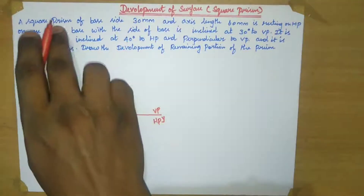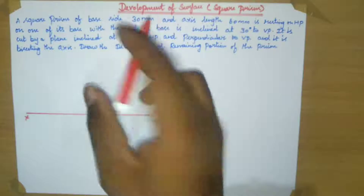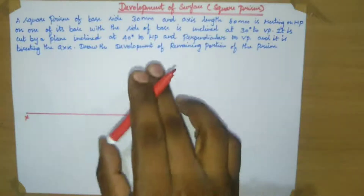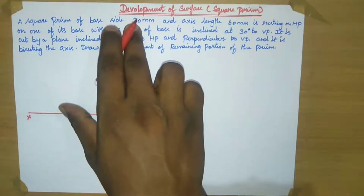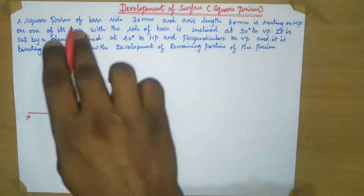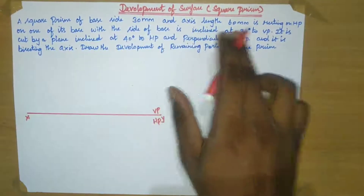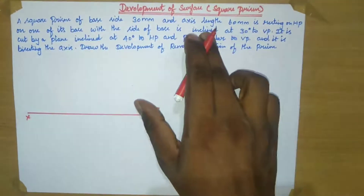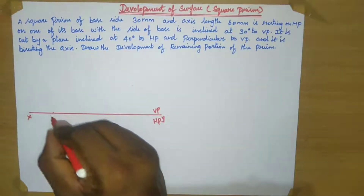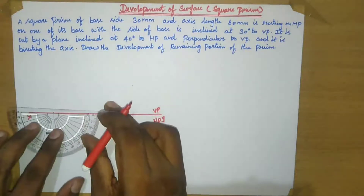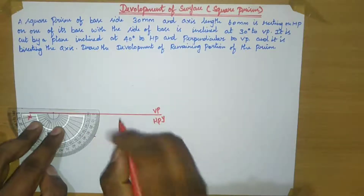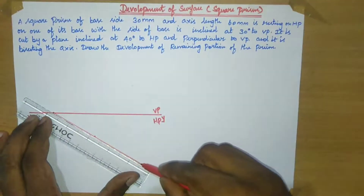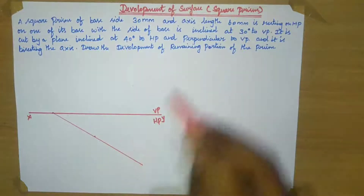So now, what have they given? A square prism of base side 30 mm. On the top view you can see a square shape, and on the front view you can see a rectangular shape. The base side is equal to 30 mm. The side of the base is inclined at 30 degrees to BP. So take your protractor and place it in the inverted position and take 30 degrees with respect to BP, and draw one line like this.